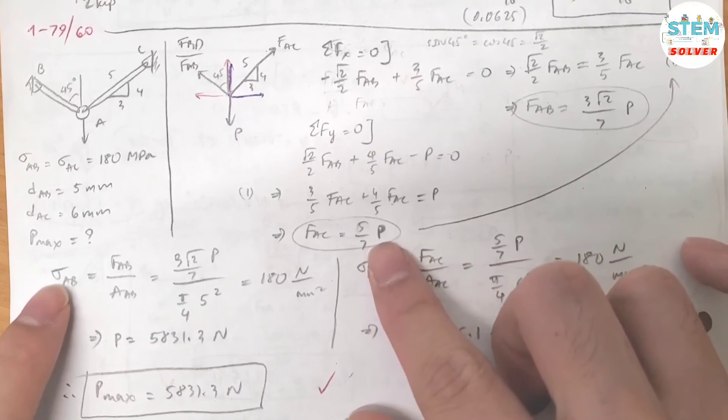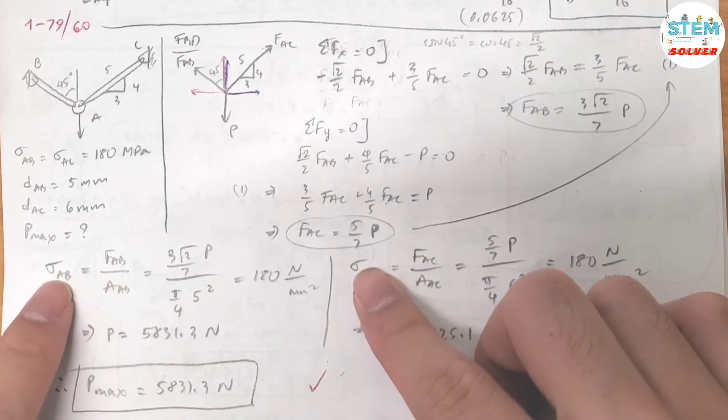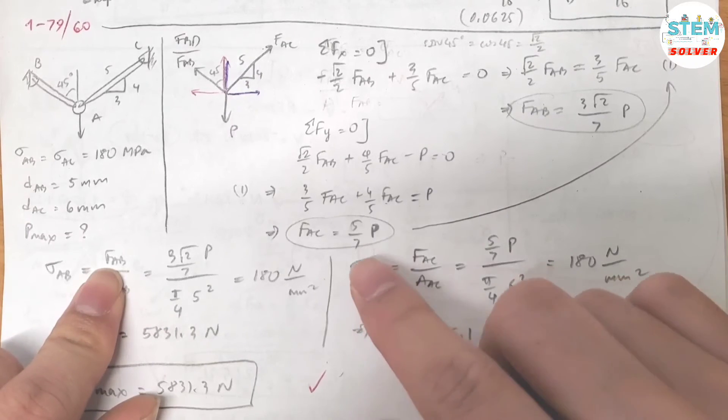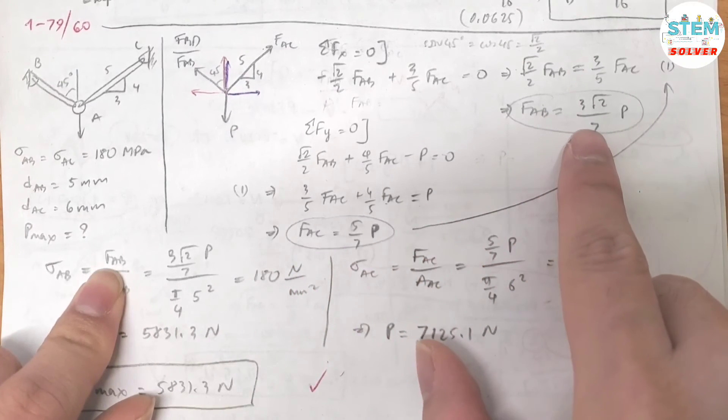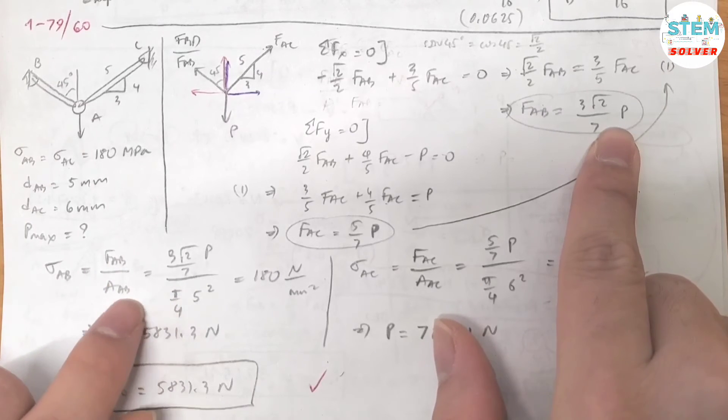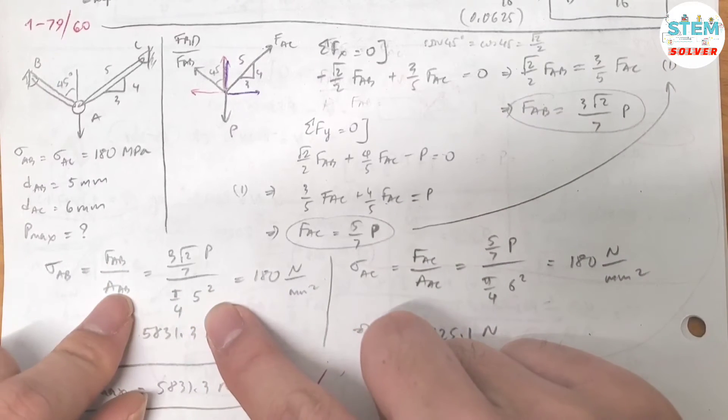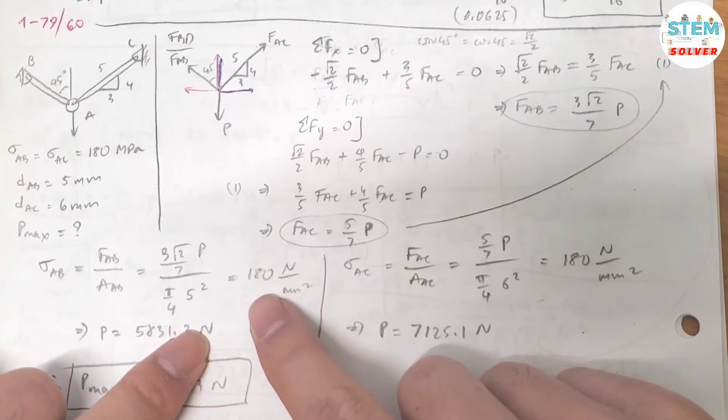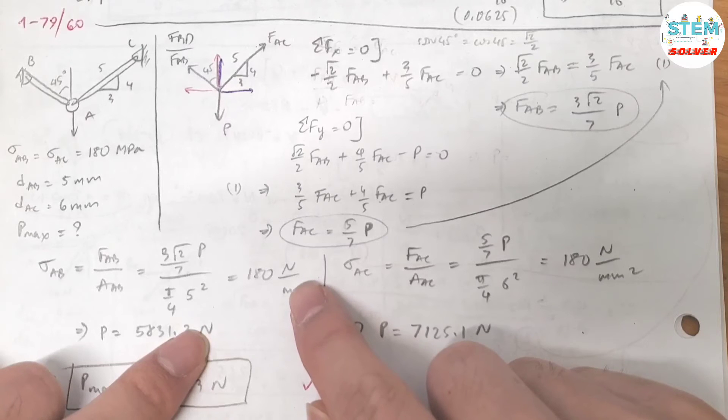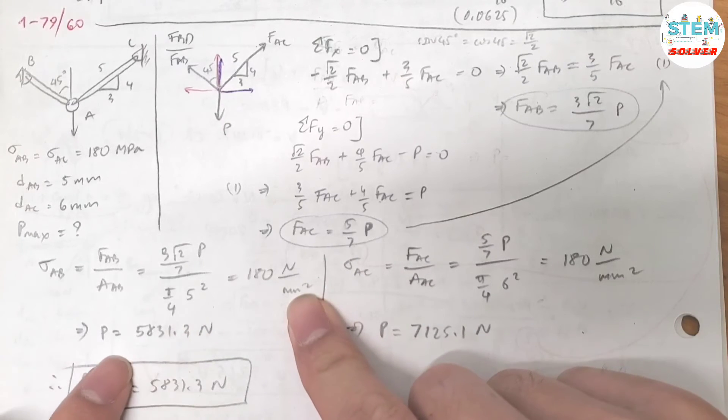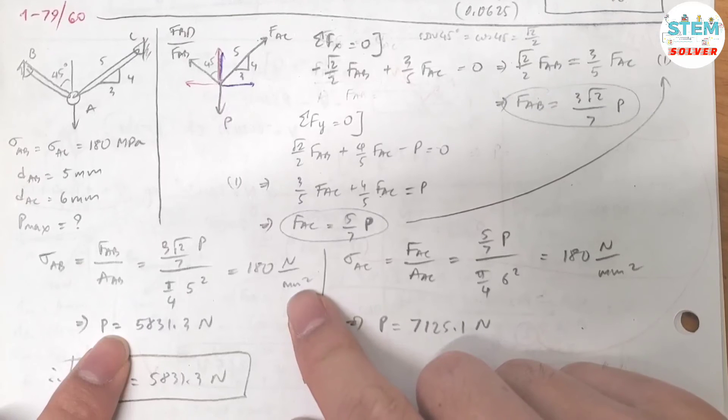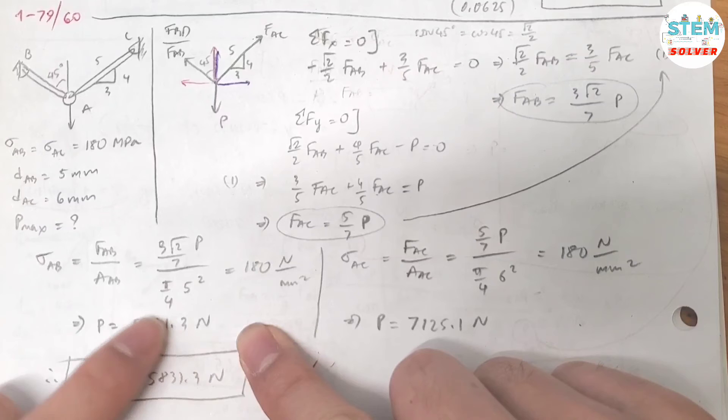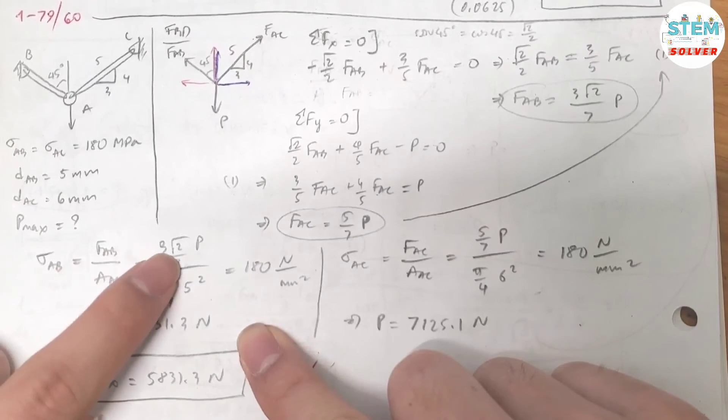The normal stress at AB equals normal force AB divided by the area AB. So FAB, I found out that it was 3 square root of 2 over 7 P divided by the area which is pi over 4 times 5 squared. And that equals the allowable normal stress of 180 MPa which also can be expressed in terms of newton per meter squared. Then I found out that P equals 5831.3 N.